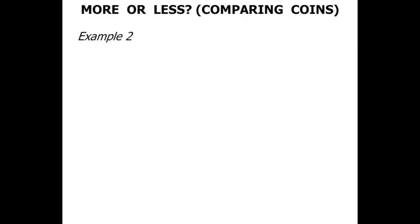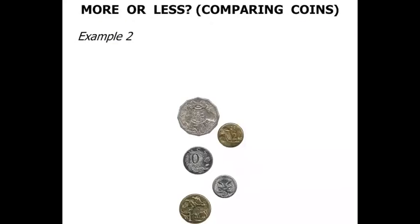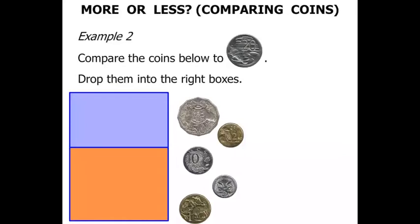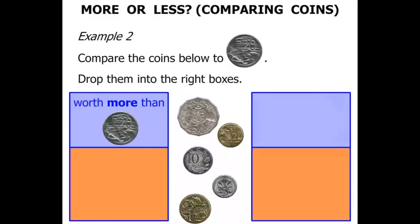Example 2 now. We've got a bunch of coins down here below. We need to compare the coins below to 20 cents. We need to drop them into the right boxes. So the box over here to the left, we're going to drop the coins that are worth more than 20 cents. And this box over here to the right, we're going to drop the coins in there that are worth less than 20 cents.